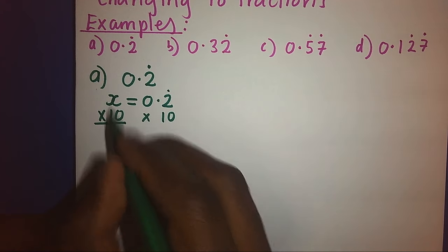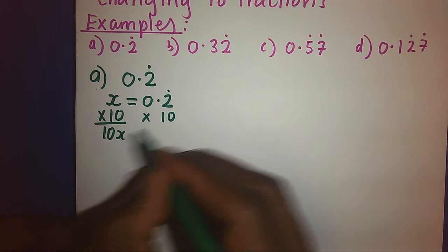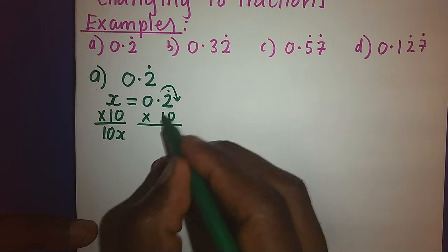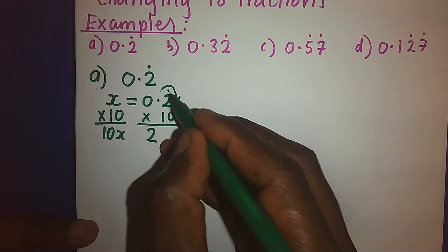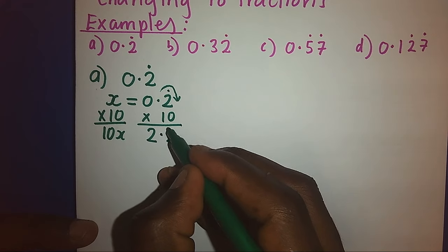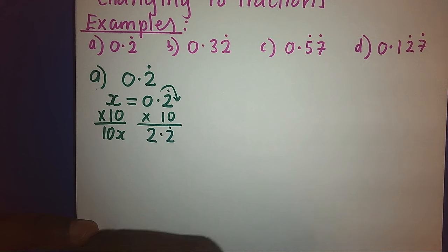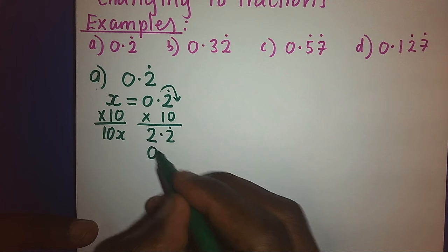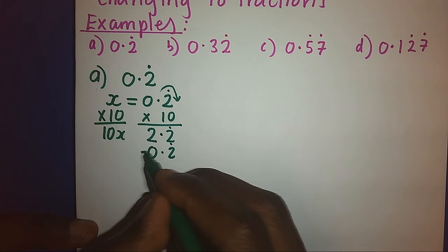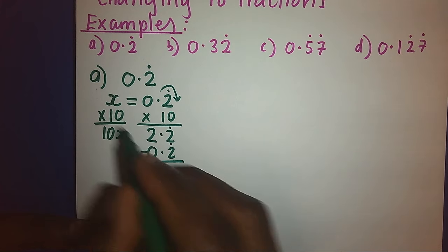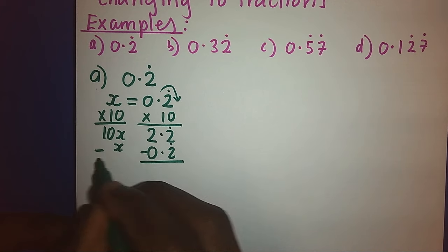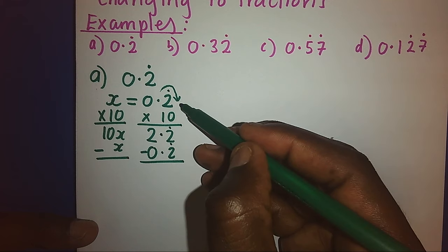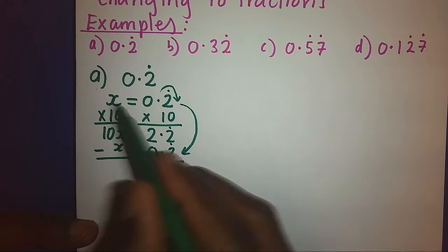Here we shall get 10x. Here, remember this point will come this side making it 2, but we have to bring down the recurring decimal. Why? Because we are going to subtract so we shall need to have a balanced decimal number. And here we shall subtract with x. So our next step here is after multiplying by 10, we shall always subtract with the starting statement.